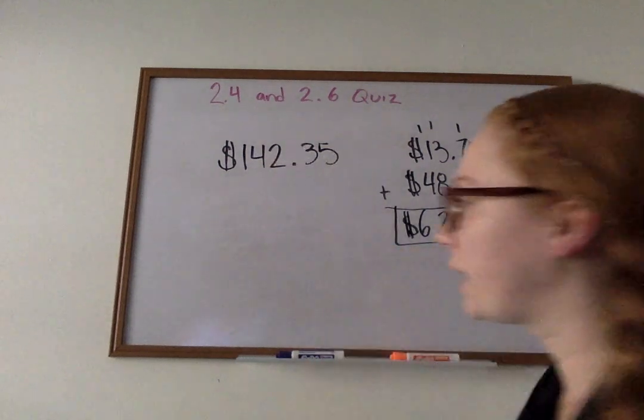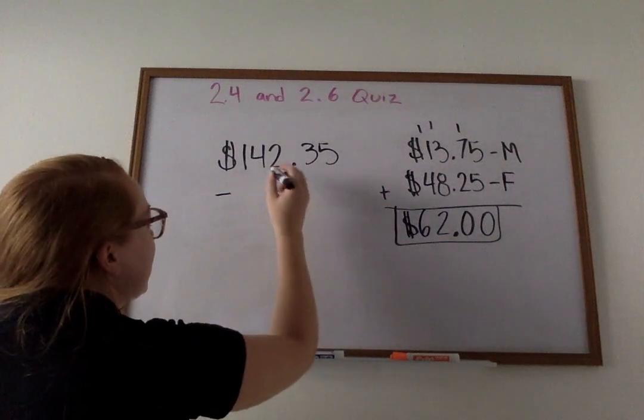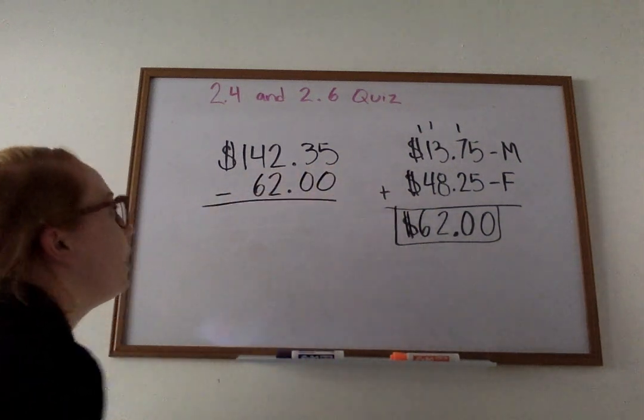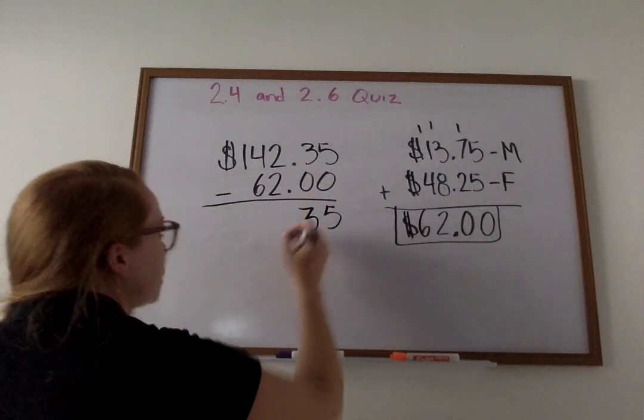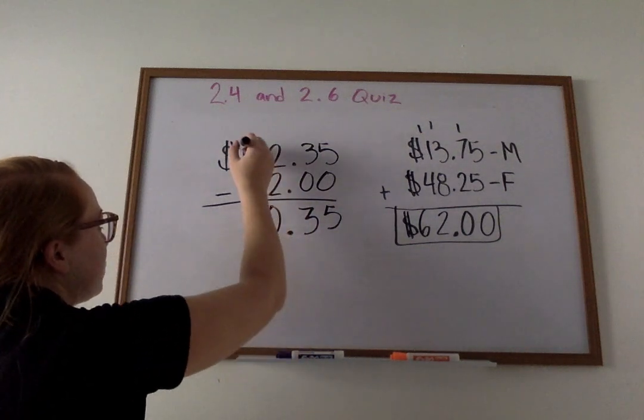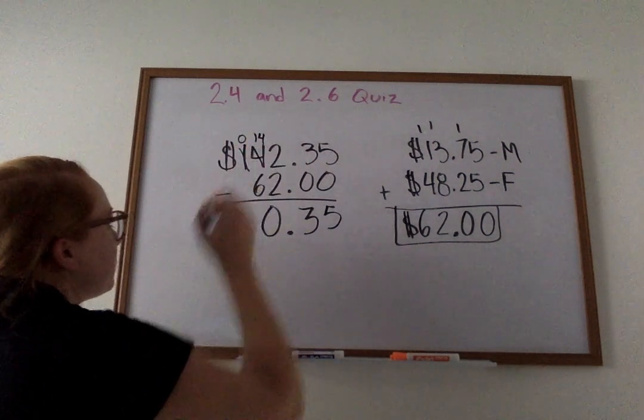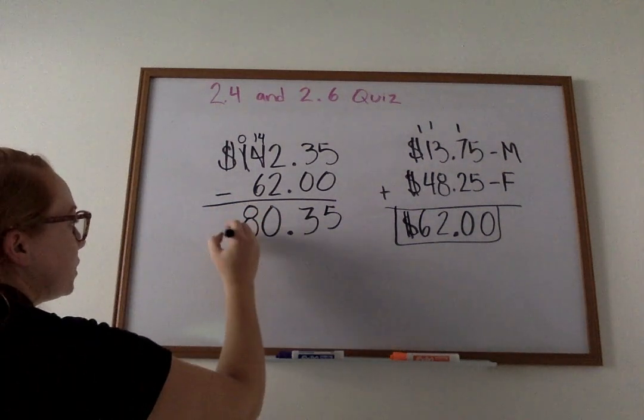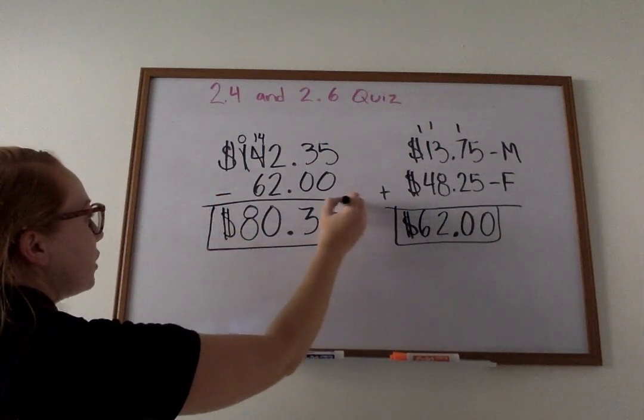So I see that $62 in all was withdrawn on Monday and Friday. Now, this is what her bank account was. Let's subtract the money that was spent on Monday and Friday. So I'm going to take away $62. 5 minus 0 is 5. 3 minus 0 is 3. My decimal comes straight down. 2 minus 2 is 0. 4 minus 6, I can't do that. I take away from my 1, it becomes a 0. My 4 becomes a 14. Now, I have 14 minus 6, which is 8. And my money amount in all that Sarah has left over in her bank account is $80.35.